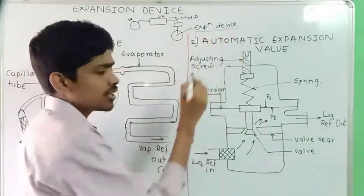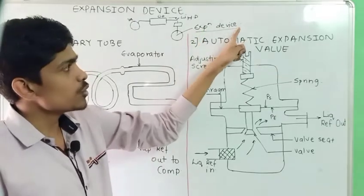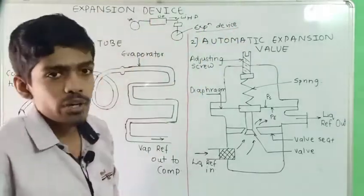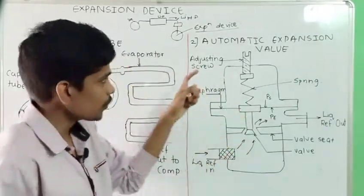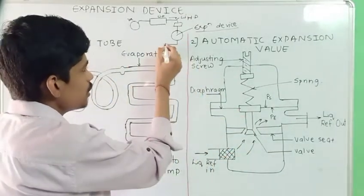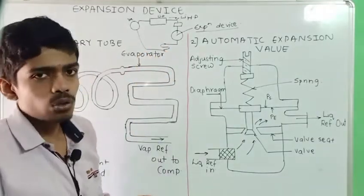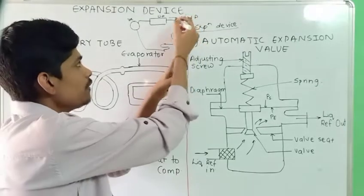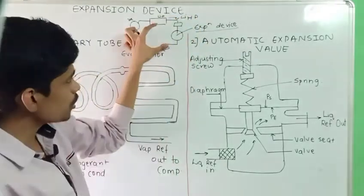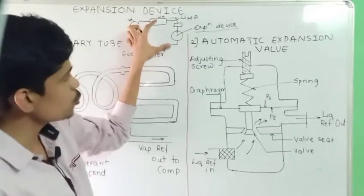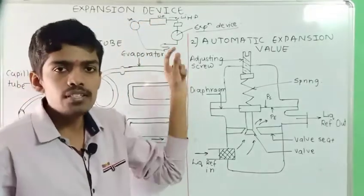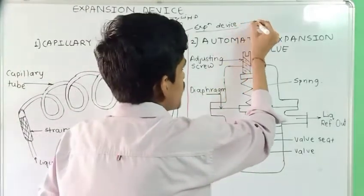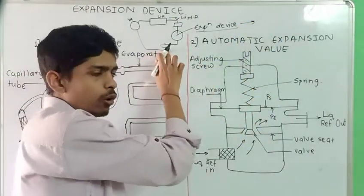So the expansion device is used to convert high pressure into low pressure. It is situated between the condenser and the evaporator — between these two main components — and that is where the expansion device is installed.